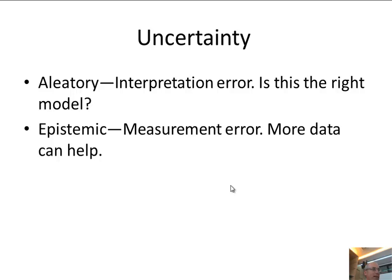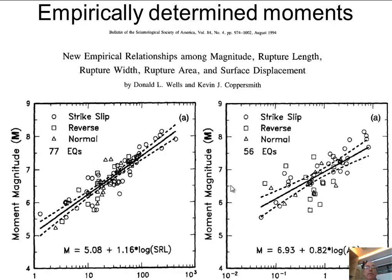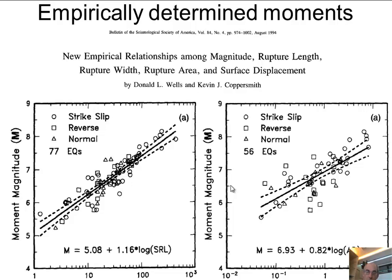These words — aleatory and epistemic — help us specify this critical part of probabilistic seismic hazard assessment. As we go through seismic hazard assessment, we need to know the expected magnitude, the moment. We've already talked about this: the seismic moment is the shear modulus times the average slip times the area. But we don't usually know all of that, so instead of computing it directly, we use an empirical relationship between something we can easily observe — like surface rupture length — and the moment.